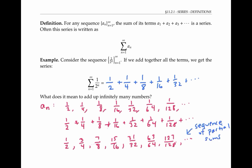The sequence of partial sums is usually denoted by S sub n. So the first term is S sub one — just adding together the first term. S sub two adds together the first two terms. S sub three means add together the first three terms, and so on. Let me contrast the sequence of partial sums with the sequence of terms we started with, denoted a sub n: a sub one, a sub two, and so on.